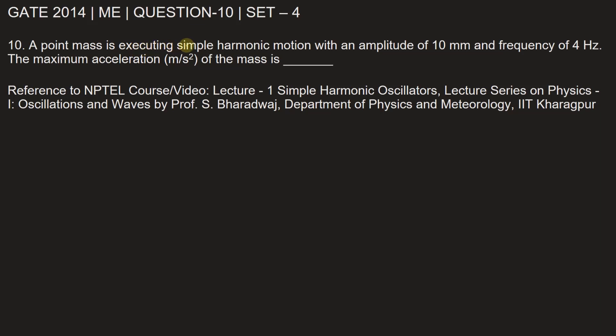A point mass is executing simple harmonic motion with an amplitude of 10 millimeters and frequency of 4 Hertz. The maximum acceleration in meter per second square of the mass is: